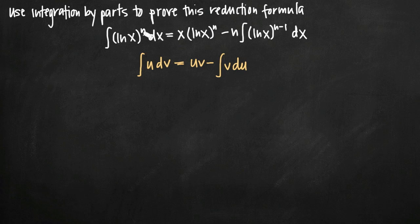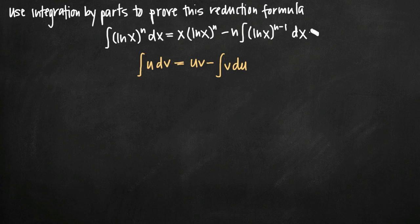For example, this reduction formula tells you that if you're given exactly the integral of ln raised to a constant — n here is a constant like 2, 3, or 4, it's not a variable — if you're given the integral of ln raised to a constant and your integral is in exactly that form, you can use this formula to give you a reduction of your original integral. In other words, the right-hand side here is going to be a simpler version of this integral.